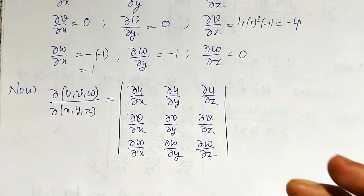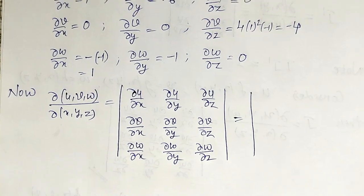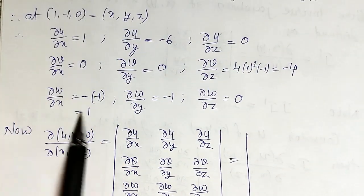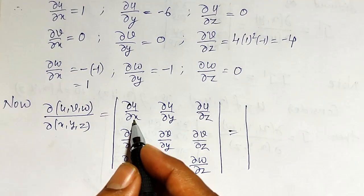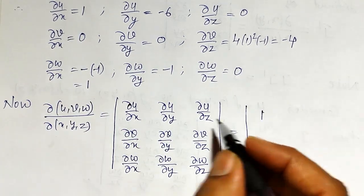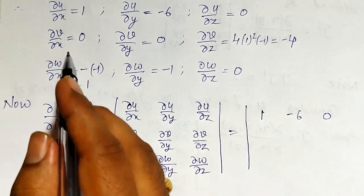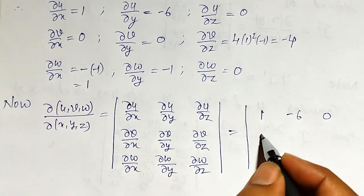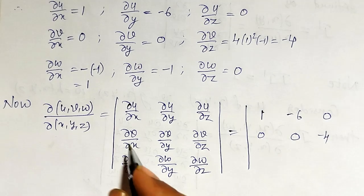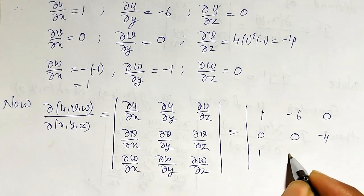All partial derivatives have already been computed at (1, -1, 0). Substituting them in: the first row is [1, -6, 0], the second row is [0, 0, -4], and the third row is [1, -1, 0].